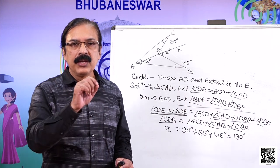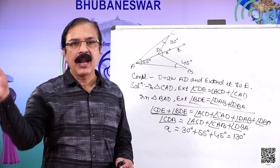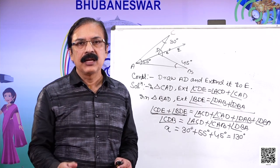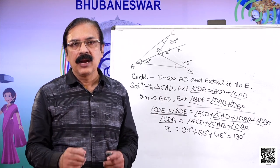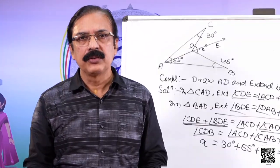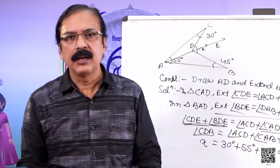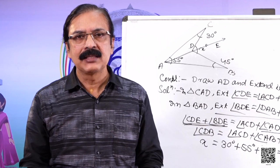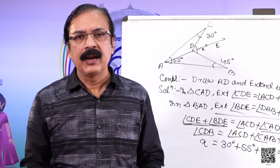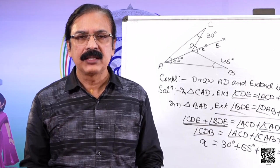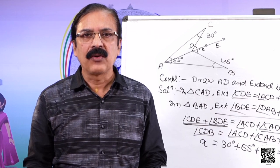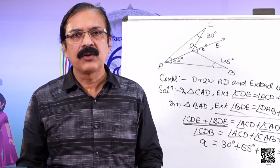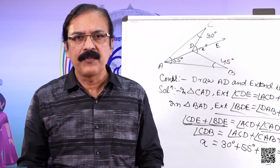Here also, we used the extended line AD to apply this exterior and interior angle relationship. Dear students, in this lesson, we learnt about parallel lines: where a transversal intersects two parallel lines, the corresponding angles are equal. And if the corresponding angles are equal, then the lines are parallel.